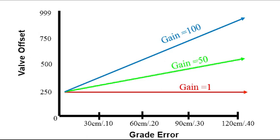In the graph shown, as grade error increases, the gains will multiply the valve offset value. With a 3 tenths error and gain set to 100, the valve offset response is increased from 250 to nearly 750. As the error decreases, the valve offset response lowers until it reaches the base number of 250.